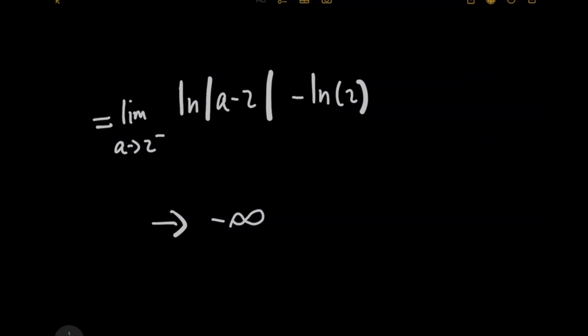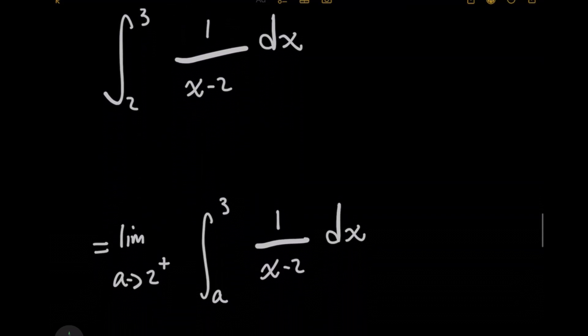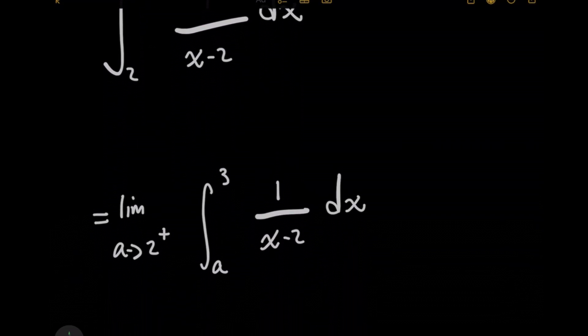And we're going to use the same idea now to solve the other integral that's to the right of the asymptote. This time now, for the lower limit of 2, we need to actually approach this by replacing that with the limit, where we're going to use A again as the variable. And this time we're going to be going in the direction such that we approach 2 from the right.